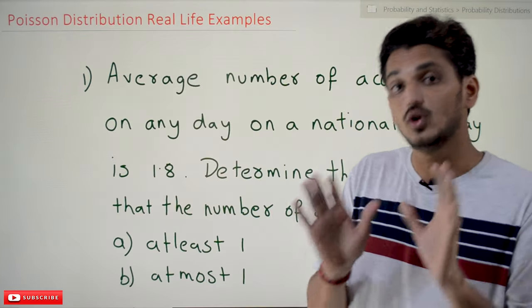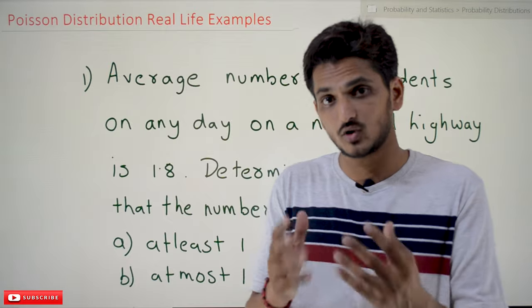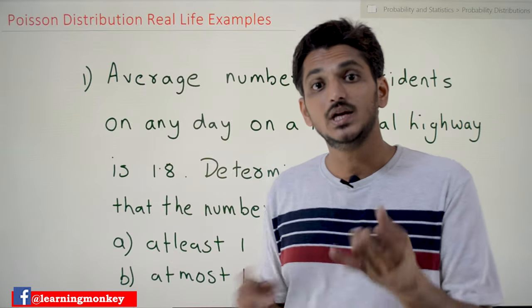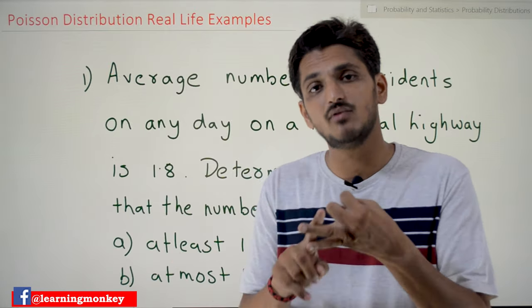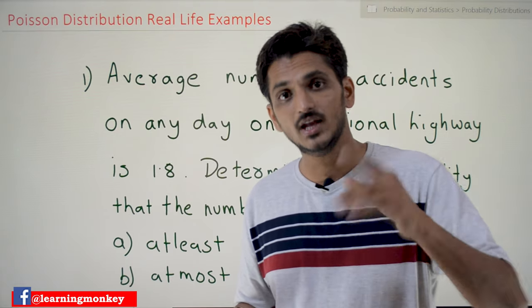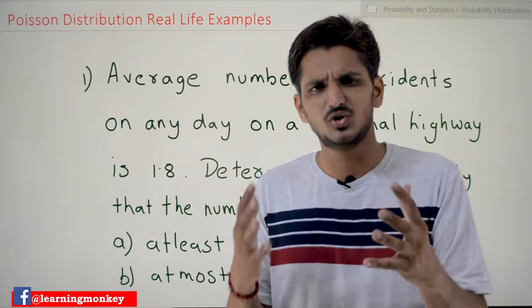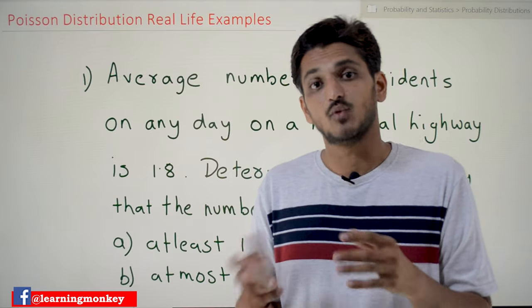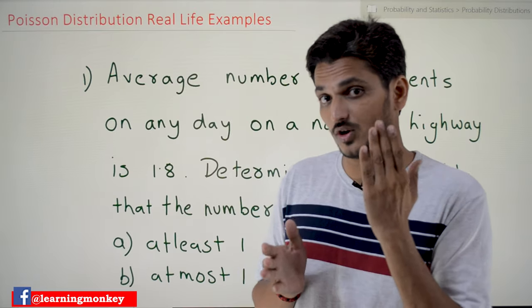If you don't have the Poisson's distribution, if you want to solve it using binomial distribution, you need the n value and you need the p value. Means, how many cars moving on the highway in one day? Is it possible to count all those? And what is the probability that a car is going to do an accident? It's not possible.